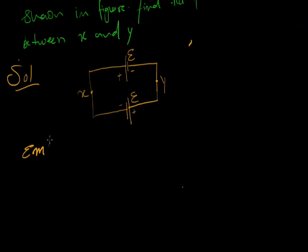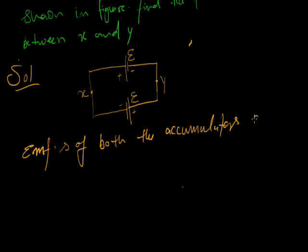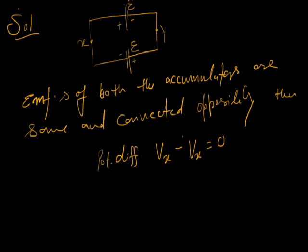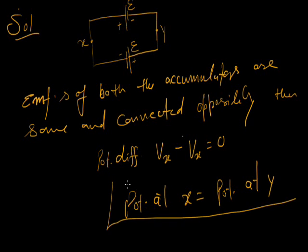The EMF of both the accumulators are same and connected oppositely. Then the potential difference Vx minus Vy is equal to 0, or we can say the potential at x is equal to potential at y because there is no potential difference and current is 0.